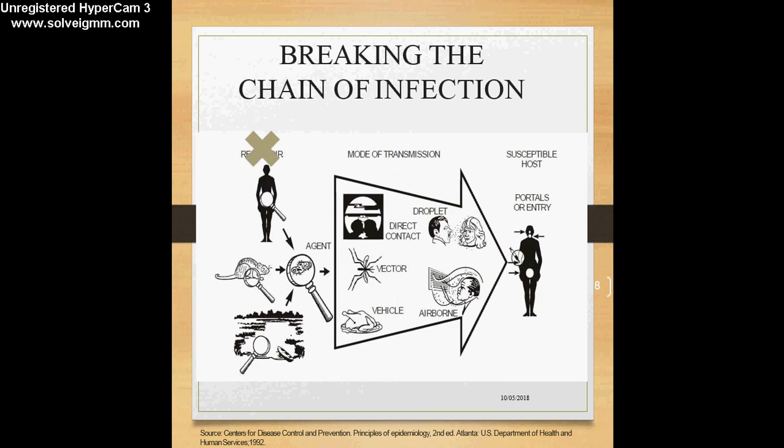Reservoirs can be human, plant, environmental, or animal. If we are able to eliminate the reservoir — the place where the organism can stay, multiply, and survive — we can largely achieve disease control. For example, if a person is suffering from tuberculosis, we eliminate the reservoir by treating the person so that Mycobacterium tuberculosis can no longer be present in that individual. With no agent, there is no question of transmission occurring.